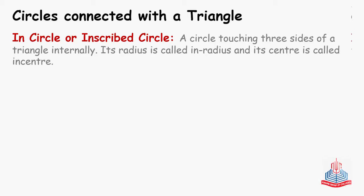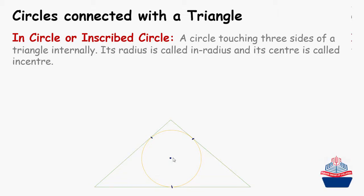Let's see how this looks. This is a triangle and this is the in-circle — a circle touching three sides. It is touching here, here, and here. Now we will define its center. The center of the in-circle is equidistant from all three sides, and that equal distance is what we call the radius.